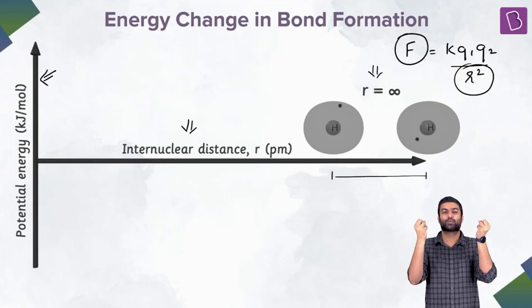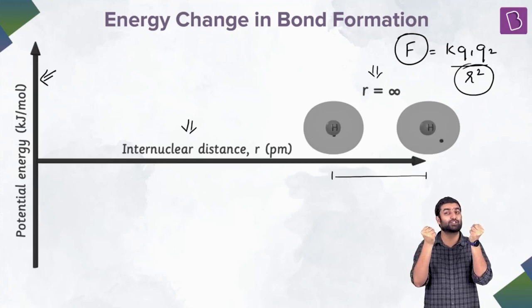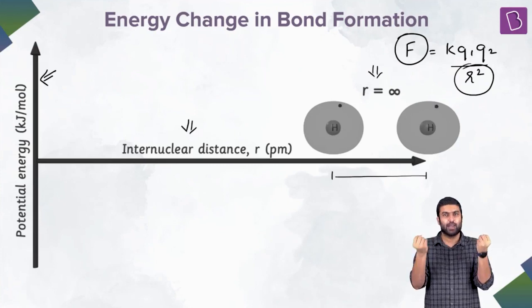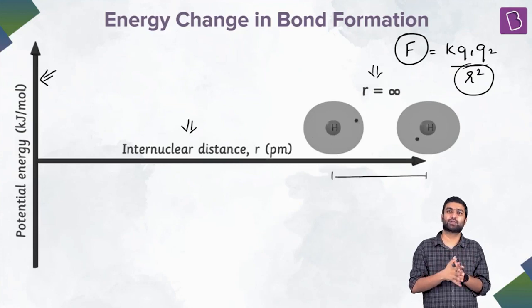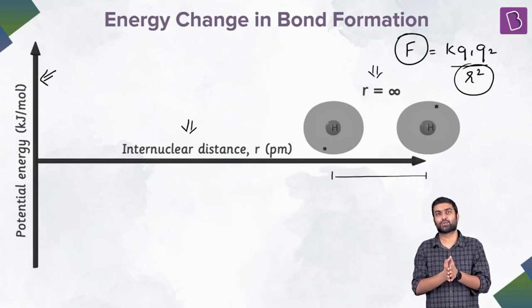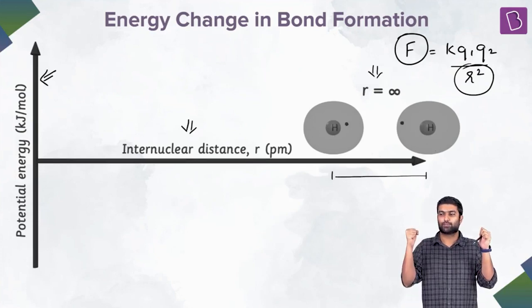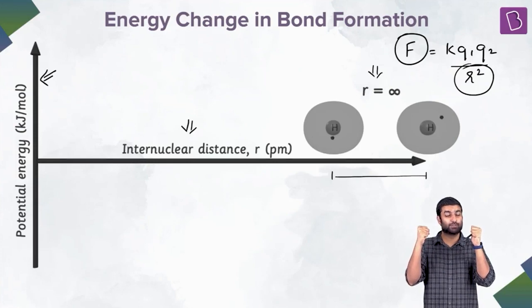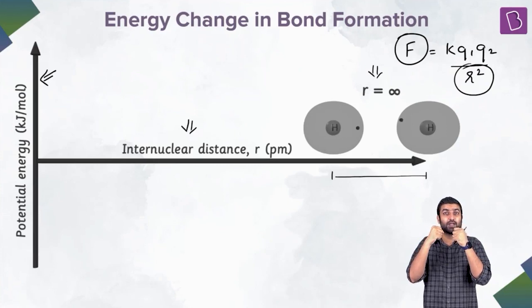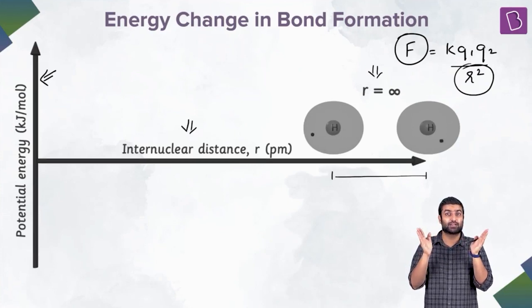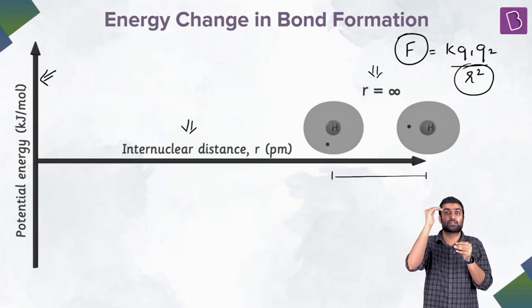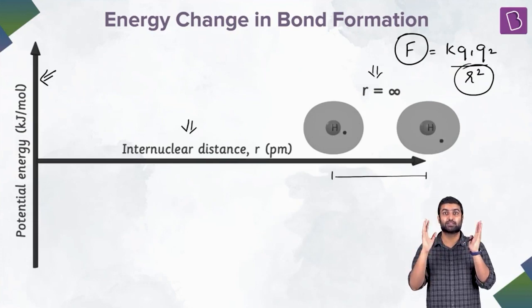We are starting from a distance where the atoms are not experiencing any force on each other, so theoretically the distance is infinity. Practically it is not infinity, but in our 11th, 12th, and JEE syllabus we consider the theoretical case only. We are bringing them closer — there is a net attractive force. These atoms give in to the attractive forces and move even closer. Giving in to the attraction means potential energy decreases.